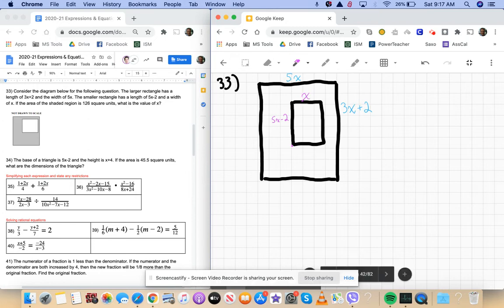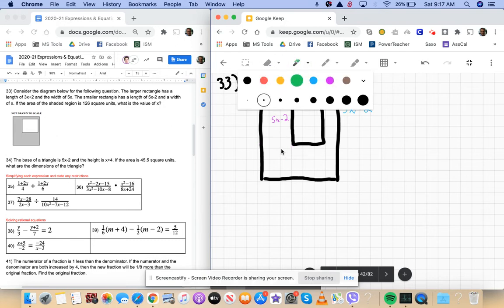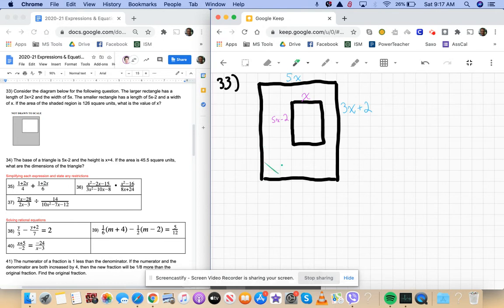That also says that the area of the shaded region, so this shaded region, if I go ahead, shaded region has an area that is equal to 126 units squared.